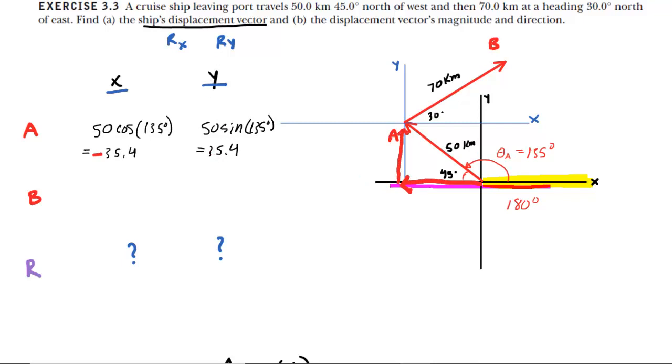We can move to vector B, and again, we want to measure our angle relative to the positive x-axis. For vector B, the positive x-axis is right here. You can see that the 30-degree angle given in the question is indeed measured relative to that positive x-axis. So we're okay with the 30-degree angle there. We take the magnitude of vector B, which is 70, and multiply it by the cosine of that 30-degree angle. And then for the y component, we take the magnitude and multiply it by the sine of the 30-degree angle.